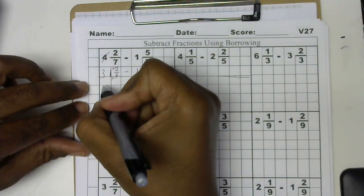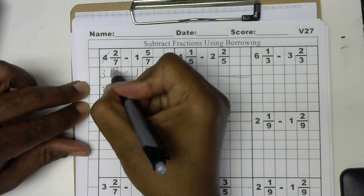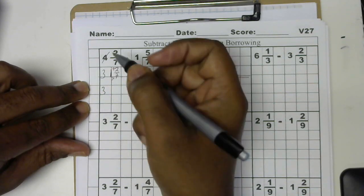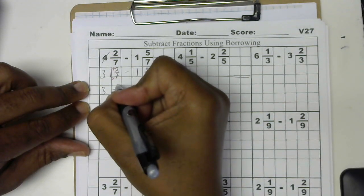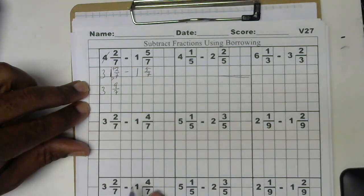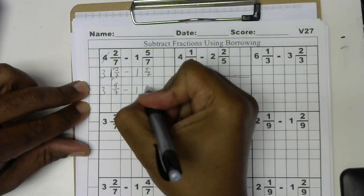So let's bring down a 3. So 7 times 1 is 7 plus 2 more makes 9. So this will be 9 over 7 minus my 1 and 5 sevenths.